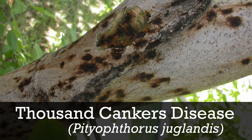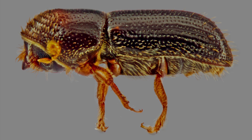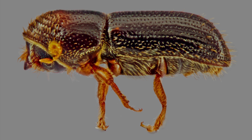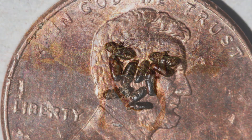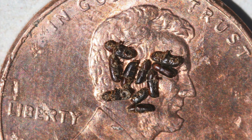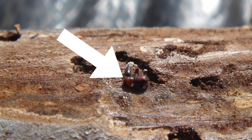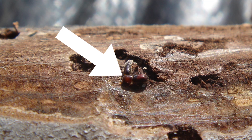To detect Thousand Cankers Disease, keep these facts in mind. The walnut twig beetle is about the size of a sesame seed and is rarely seen, so to detect TCD, you should look for signs of infection.